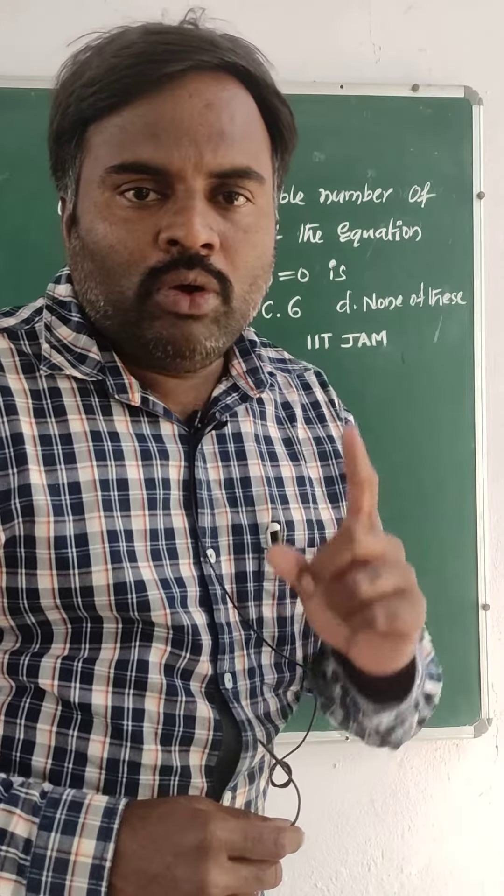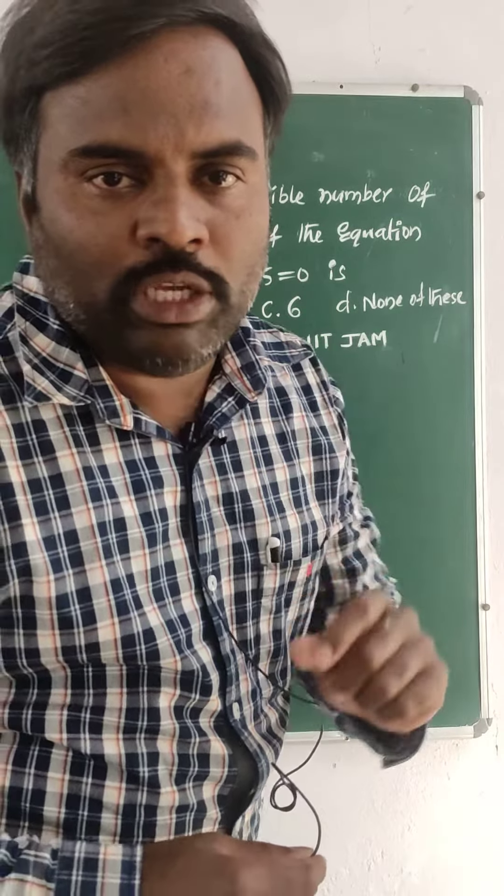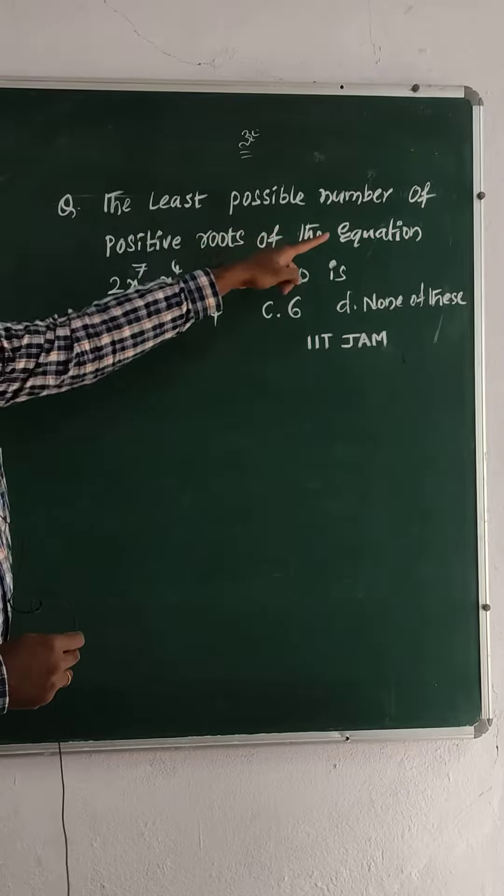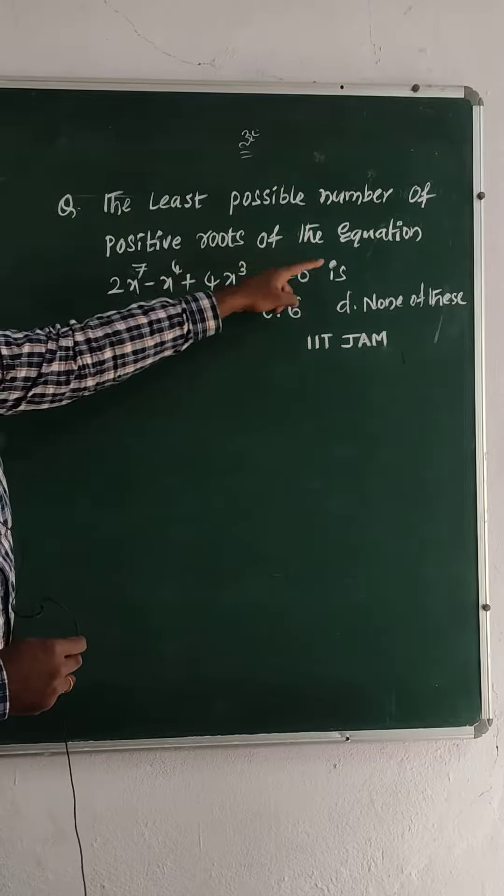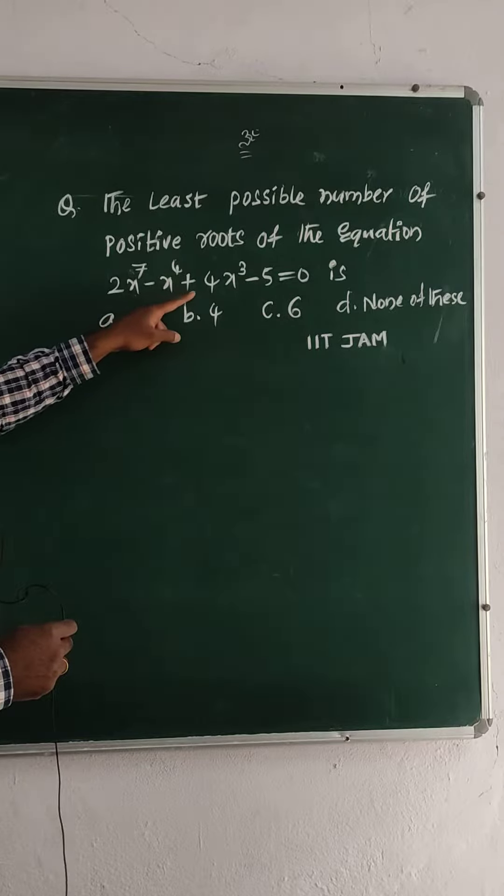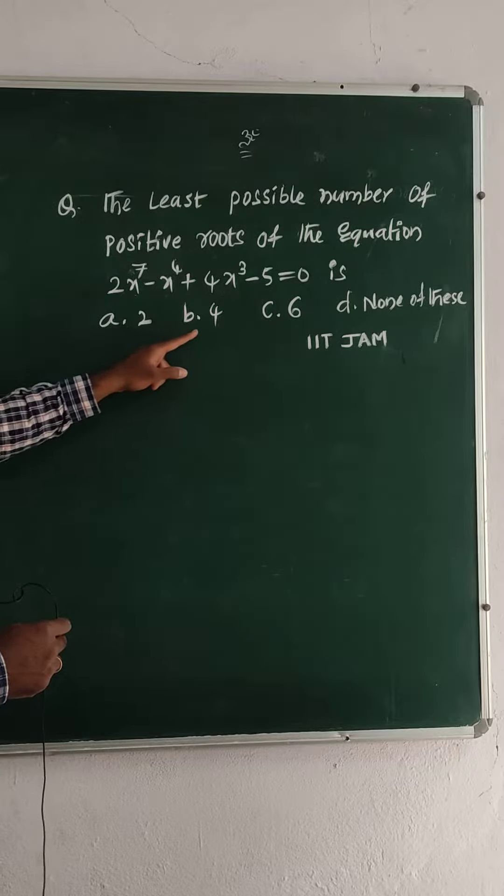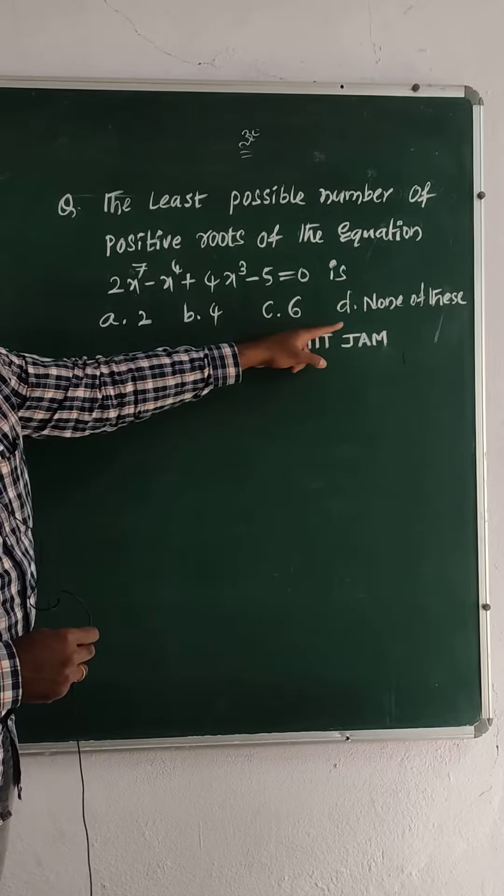Hi friends, in this video I'll solve an IIT JAM problem. The problem asks: the least possible number of positive roots of the equation 2x power 7 minus x power 4 plus 4x cube minus 5 is equal to 0 is option a) 2, b) 4, c) 6, d) none of these.